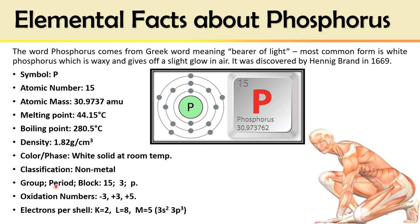The group, period, and block are 15, 3, and P block — it belongs to group 15, period 3, and is a P block element. Oxidation numbers are −3, +3, and +5. This variability is because of the electronic configuration in the M shell, which has 5 electrons: 2 in the S subshell and 3 in the P subshell. This electronic configuration is responsible for the oxidation numbers of phosphorus.